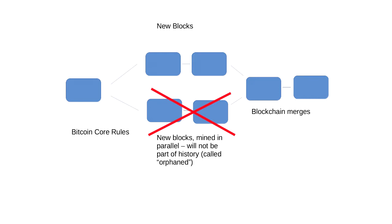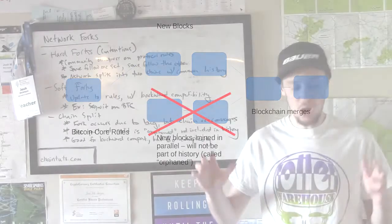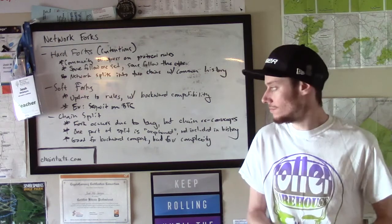Eventually when this bug was fixed, the blockchains merged back together, and so there is now one shared history that Bitcoin is still following. The side of the chain that did not win out in mining — in this case, the BerkeleyDB side that kept rejecting the LevelDB blocks — ended up not being included in the blockchain history. These are called orphaned blocks: blocks that are mined but, during the chain split period, when the blockchain eventually merges back together, are not included in the history.